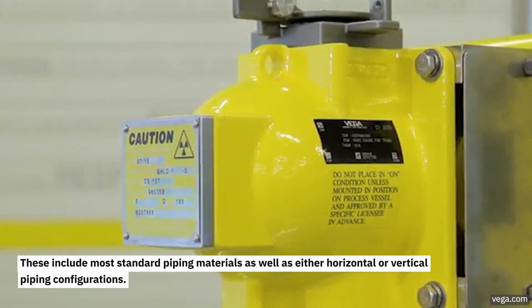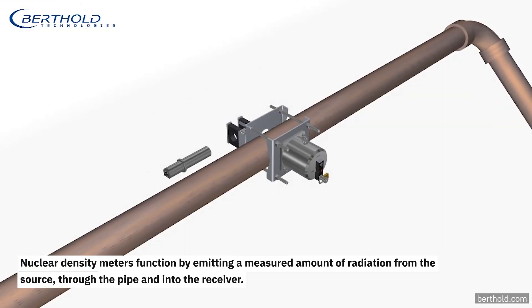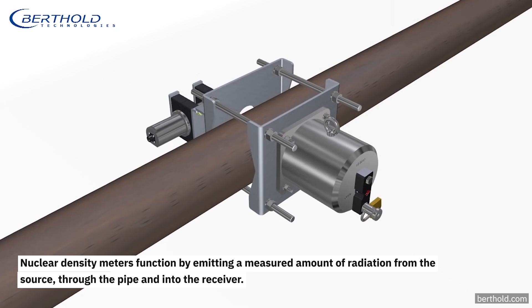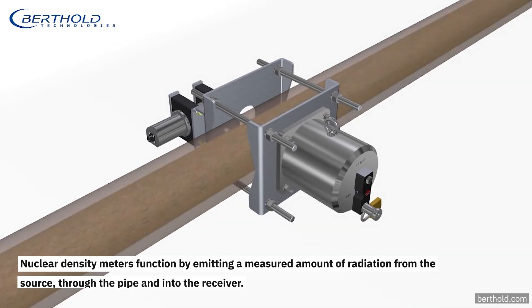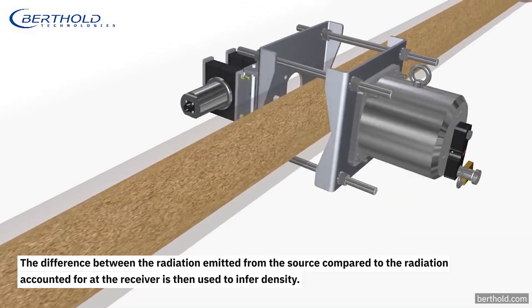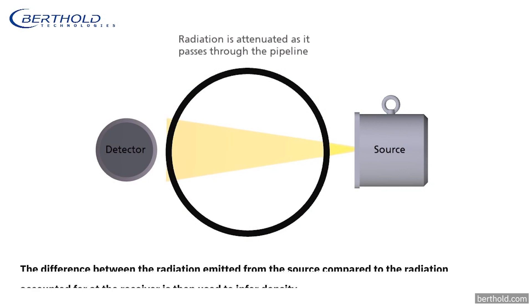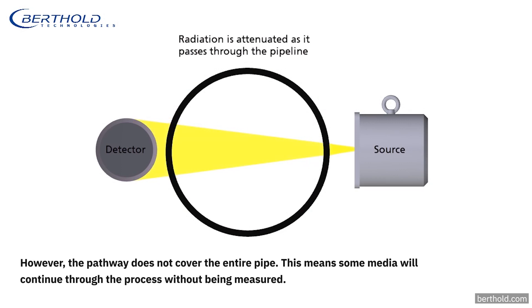Nuclear density meters function by emitting a measured amount of radiation from the source through the pipe and into the receiver. The difference between the radiation emitted from the source compared to the radiation accounted for at the receiver is then used to infer density. However, the pathway does not cover the entire pipe, which means some media will continue through the process without being measured.